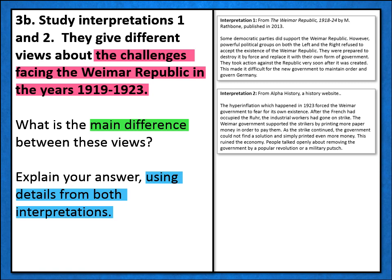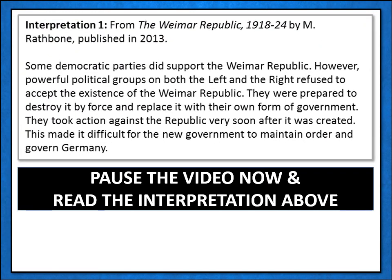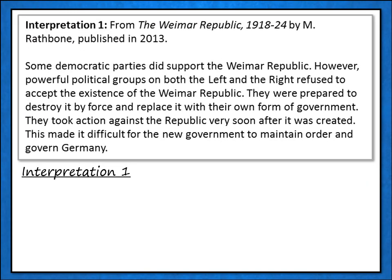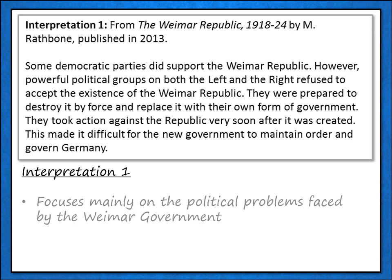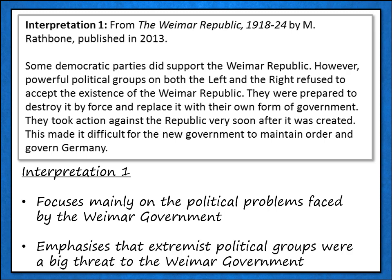Here are the two interpretations provided with this question. First of all, here's interpretation 1 — you may wish to pause the video now and read the interpretation carefully for yourself. Now we've read the interpretation, we can start to think about it. Remember, the question asked us about challenges facing the Weimar Republic. In this interpretation, the historian seems to be focusing on the political challenges which faced the Weimar government. In particular, the historian seems to emphasise the threat which extremist political groups posed to the Weimar government — it even says that they were prepared to destroy the Weimar government by force and replace it with their own form of government.